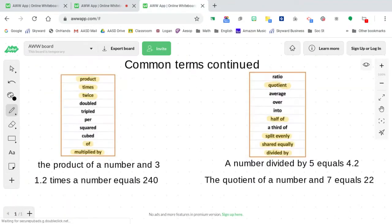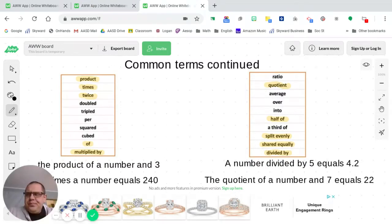Let's move on to some multiplication and division. Some common multiplication terms that you will see is product, which we know or should know is the answer to a multiplication problem. Times. That pretty much tells you what you're going to do. A lot of times you might see two times a number.